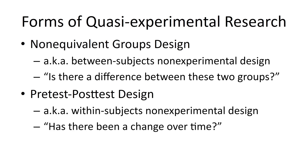Or you could do the pre-test post-test design, which is basically just a within-subjects non-experimental design. This would ask questions such as: has there been some change over time in the group we're interested in? When it comes to quasi-experimental research design, it's basically the exact same thing as experimental design. The only difference — in many cases literally the only difference — is that the grouping variable is not manipulated. You could also do a combination of the two.